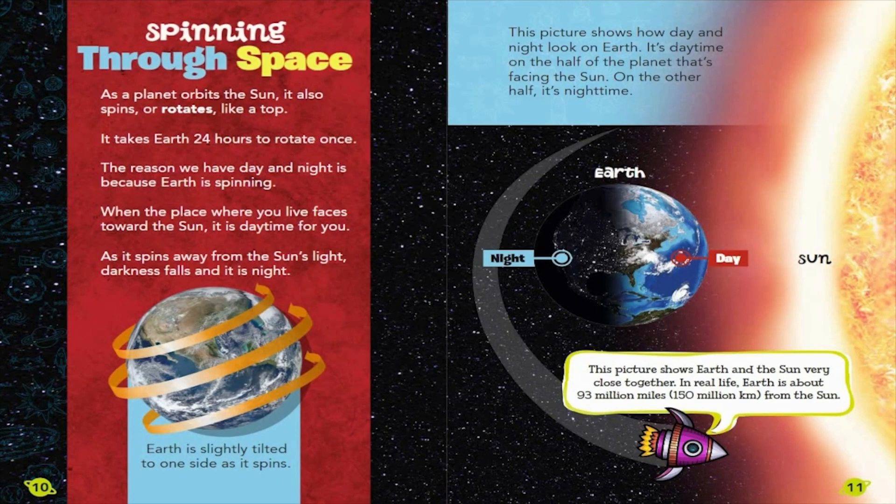Spinning Through Space. As a planet orbits the Sun, it also spins or rotates like a top. It takes Earth 24 hours to rotate once. The reason we have day and night is because Earth is spinning. When the place where you live faces toward the Sun, it is daytime for you. As it spins away from the Sun's light, darkness falls, and it is night.